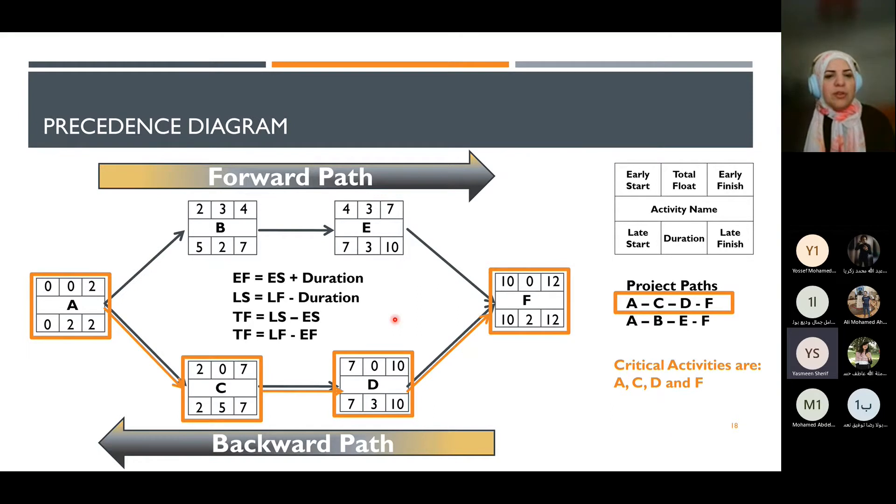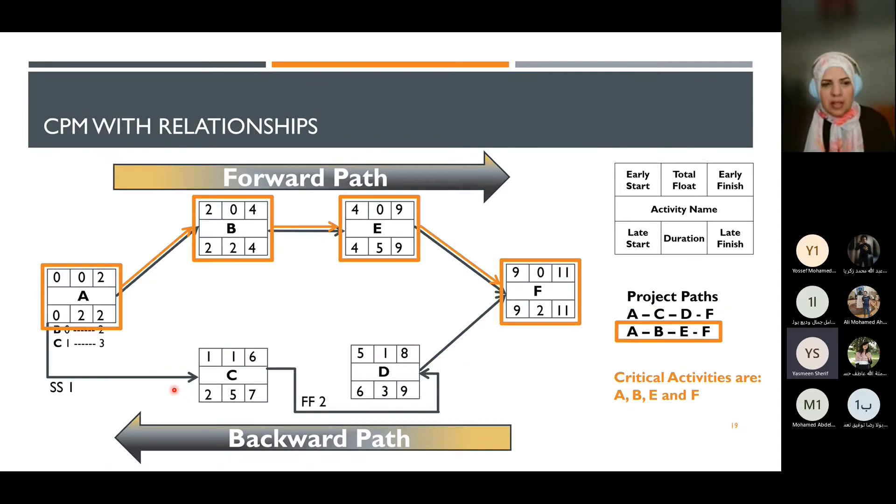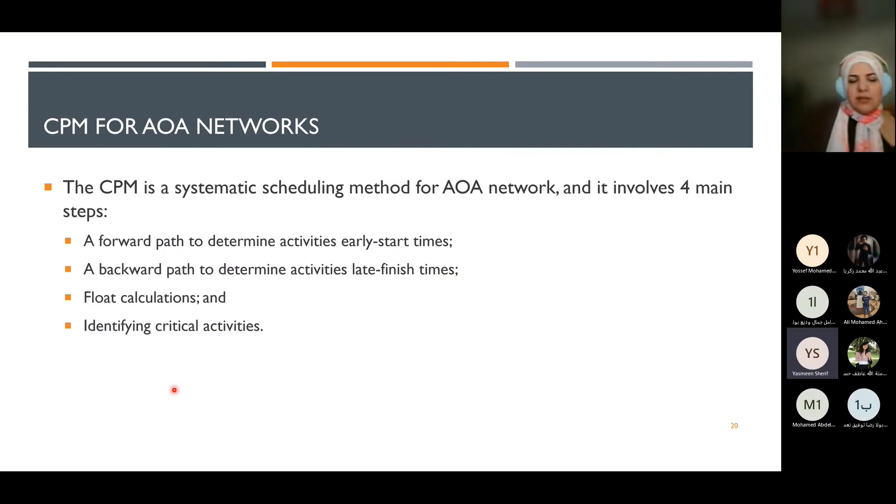We examine different types of activities and their relationships, including relationships that are embedded in the activities versus those explicitly shown. We then apply the CPM method to the activity on arrow network representation.